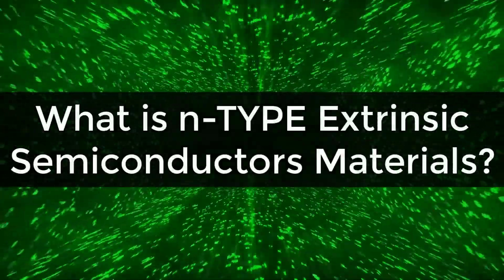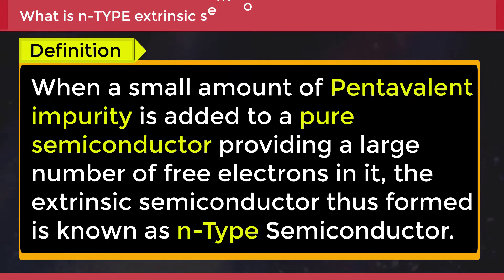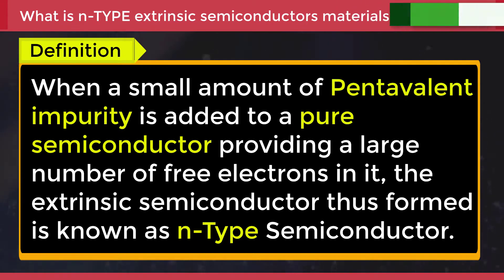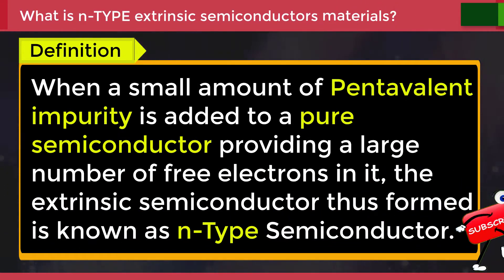What is n-type extrinsic semiconductor materials? When a small amount of pentavalent impurity is added to a pure semiconductor providing a large number of free electrons in it, the extrinsic semiconductor thus formed is known as n-type semiconductor.